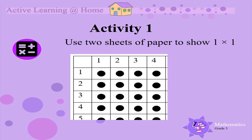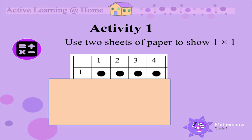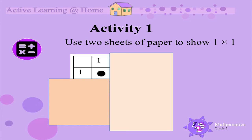You will need two sheets of paper. Use the two sheets of paper to show one times one on the array diagram. Cover everything below the row with one and cover everything to the right of the column with one. One times one is one.